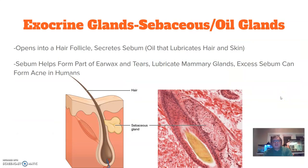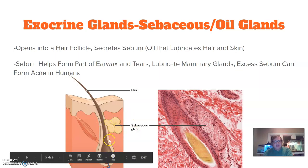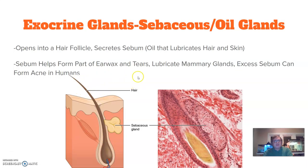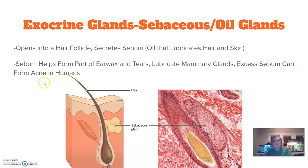Another exocrine gland is the sebaceous or oil gland. These open into a hair follicle and secrete sebum — basically the oil that lubricates hair and skin. You can see the sebaceous gland attached to the hair follicle here growing from the dermis, so they're very closely tied to hair follicles. Sebum can also help form part of earwax and tears, and helps lubricate mammary glands. Excess sebum can form acne in humans — humans are actually the only mammal known to have that condition, which is a rather unique feature.